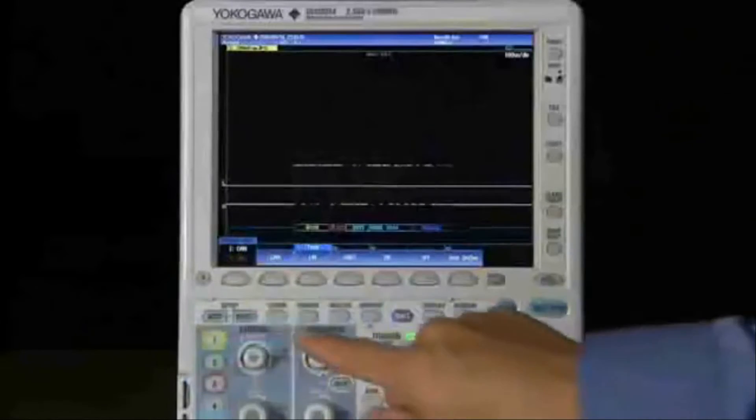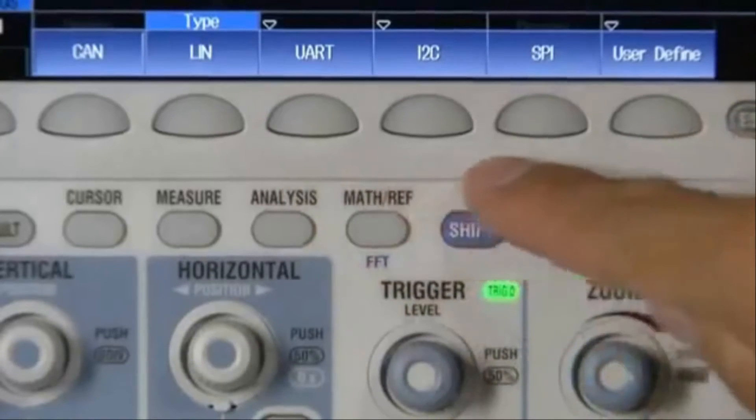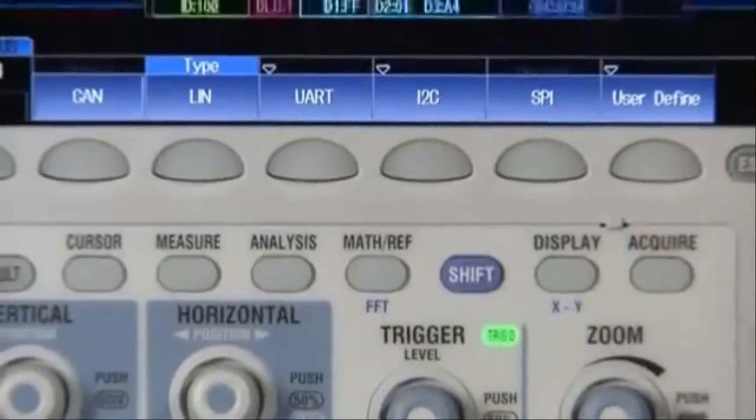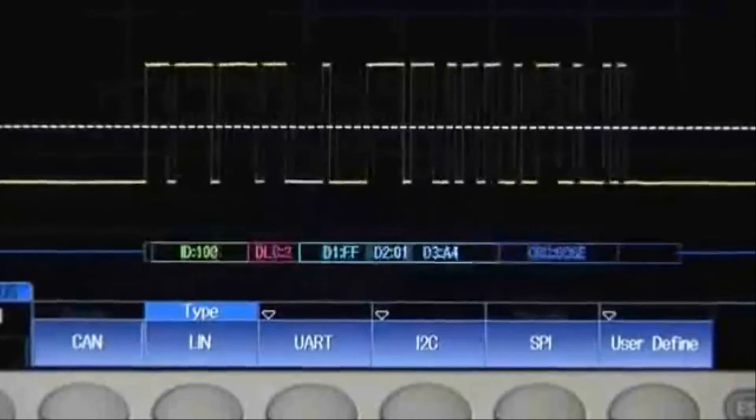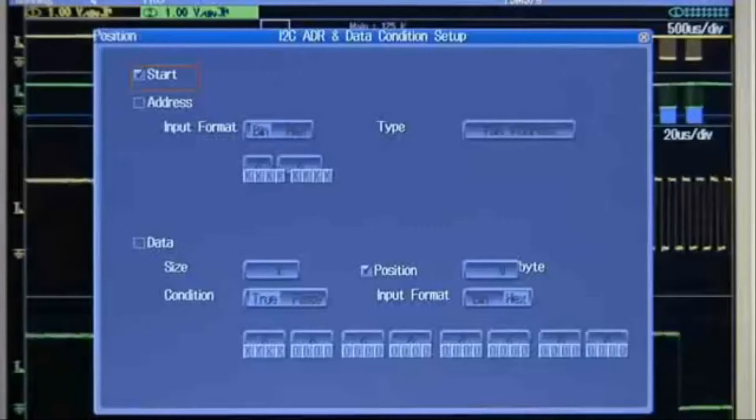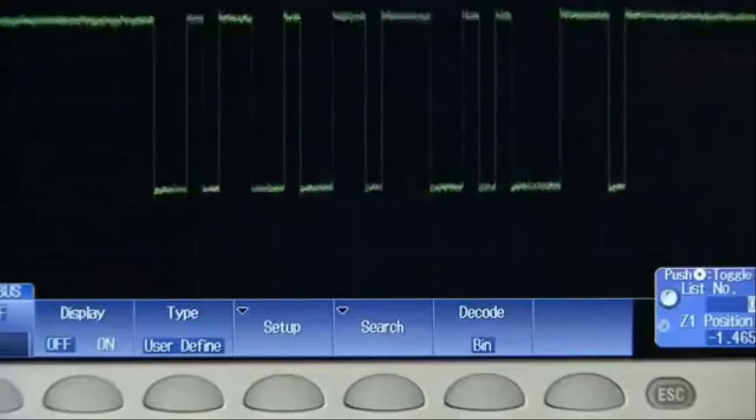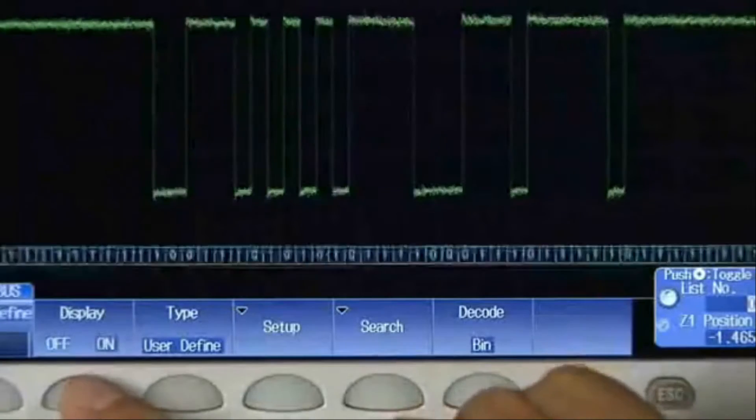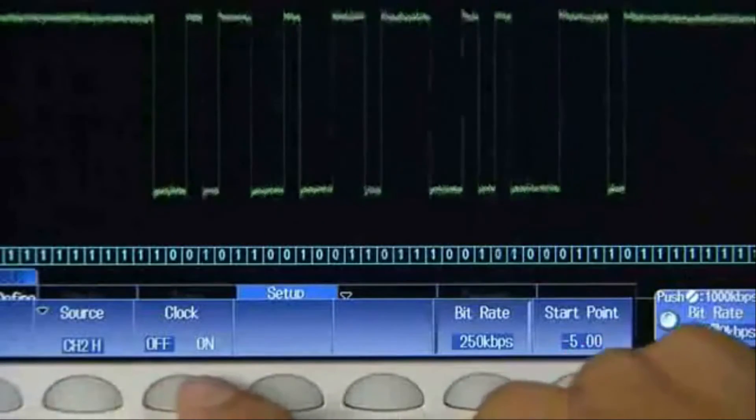Viewing serial bus signals with an oscilloscope has never been easier. For popular buses including CAN, LIN, UART, I2C, and SPI, the DLM2000 can automatically detect and display packet information directly beneath the time domain waveform. It can search or trigger on specific serial bus conditions. You can even decode custom user-defined serial buses by simply configuring the most common serial bus parameters.